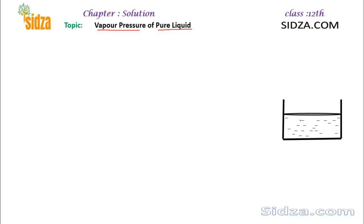In the liquid state, the particles are in constant motion — they are moving with different velocities. Suppose we have water, or any other liquid, and we heat it slightly and maintain a particular temperature, say 40 degrees Celsius, and we keep the temperature of the water at 40 degrees Celsius.